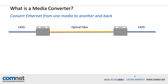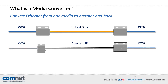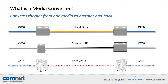An optical fiber media converter converts to a fiber optic cable and then back. Although an extended distance Ethernet media converter stays on copper cabling, it converts from a standard CAT5 or 6 to a non-standard copper cable, such as a coaxial cable or an unshielded twisted pair cable, and then back to a standard cable. A wireless Ethernet media converter converts the Ethernet to a radio frequency to be transmitted through the air.